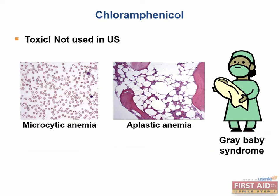Gray baby syndrome is characterized by an ashen gray color of skin, vomiting, limp muscle tone, and eventually cardiovascular collapse.